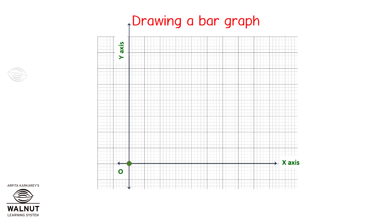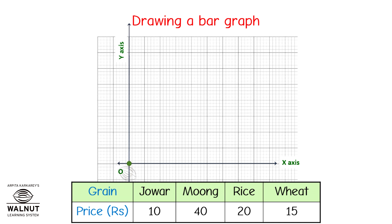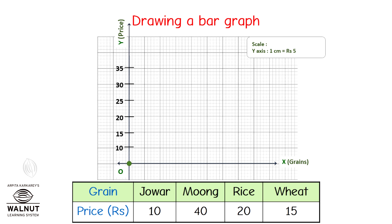Let us now draw another graph with this data. We are going to have the price on the y-axis and the grain on the x-axis. Now decide the scale. On the y-axis we have the price — take a look at the values of price. They are all in the table of 5, so let us take 1 centimeter equals 5 rupees on the y-axis. Now let us mark the y-axis. Since the lowest value is 10, let us start at 10 and go ahead in multiples of 5. We mark the y-axis and then we mark the grains on the x-axis.